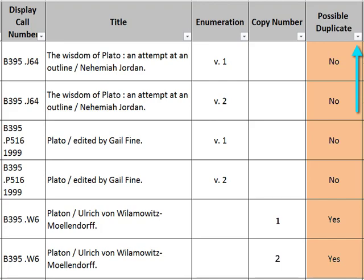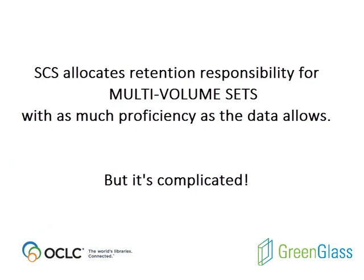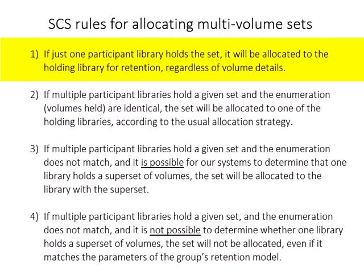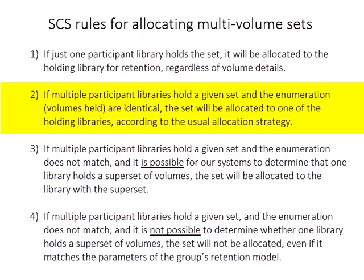With regard to multi-volume sets, SCS allocates retention responsibility with as much proficiency as the data allows. If just one participant library holds the set, it will be allocated to the holding library for retention, regardless of volume details. If multiple participant libraries hold a given set and the enumeration, or volumes held, are identical, the set will be allocated to one of the holding libraries according to the usual allocation strategy.